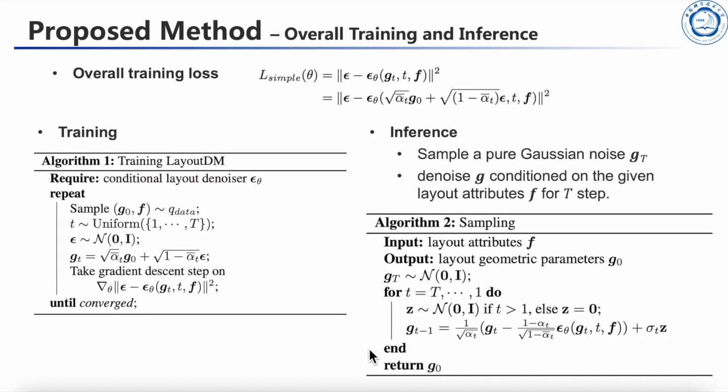Layout DM is trained using the simplified loss function defined in DDPM with an additional conditional input F. Here we present the training and sampling algorithm for layout DM. During inference time, we sample a pure Gaussian noise GT and then denoise it iteratively to generate layouts conditioned on the given layout attributes F.